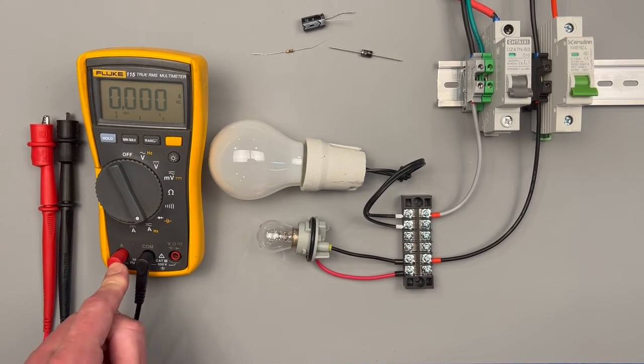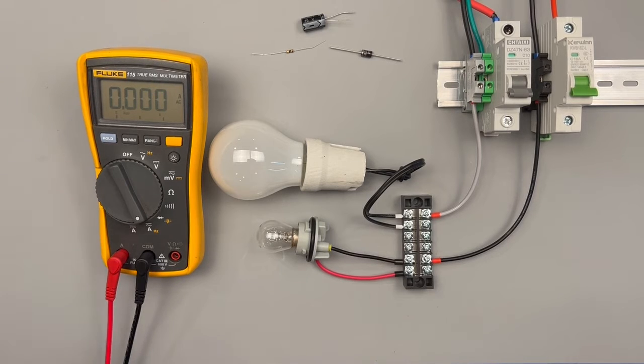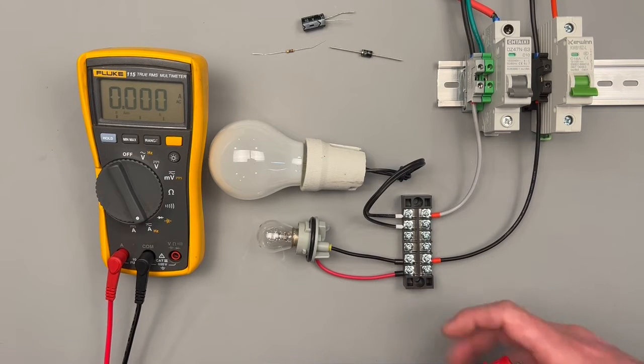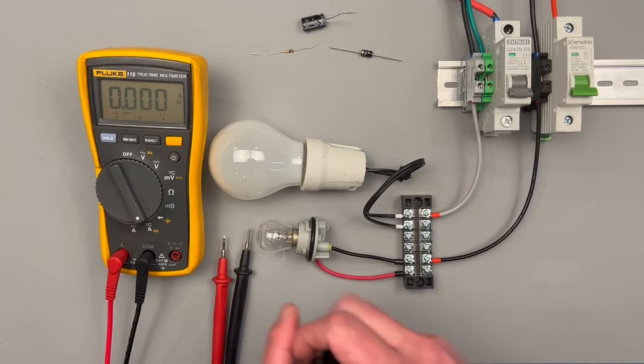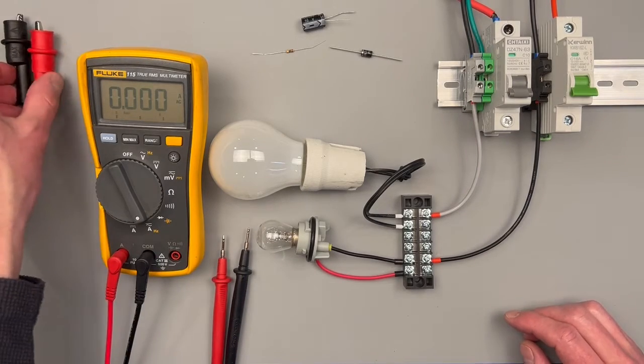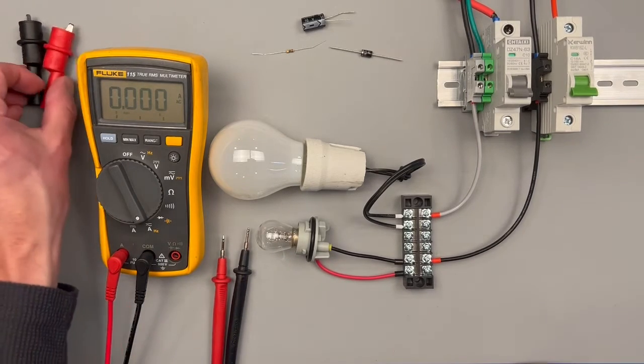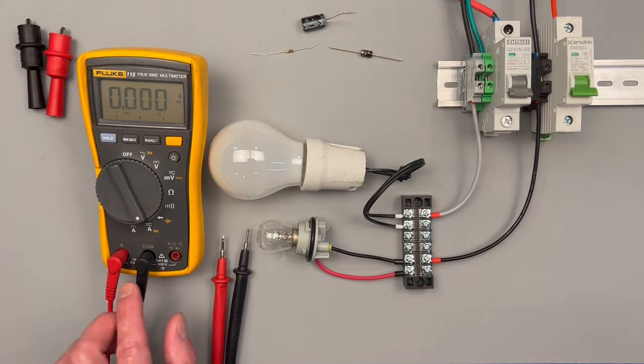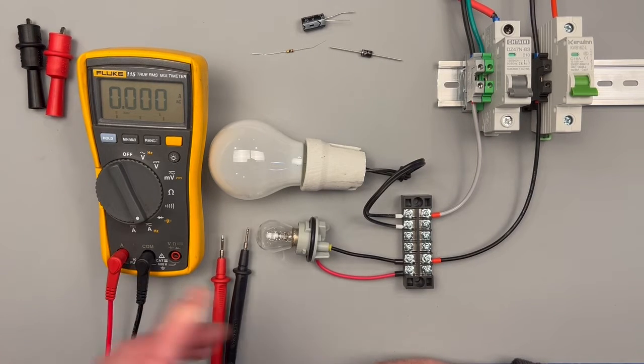Now I've switched my meter leads over to the amperage position. My red lead is on the amperage position and I'll be testing in series now. When your meter is in this configuration, you can easily damage electronic components and you can easily damage the fuse in your meter. You can make it pop.